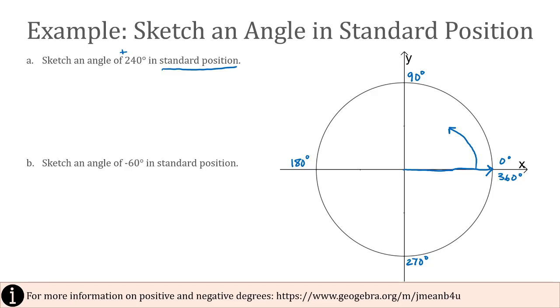240 degrees is going to go through the first quadrant, through the second quadrant, and it looks like it's going to go about 60 degrees beyond that second quadrant, having it end its terminal side in the third quadrant. So this angle in the third quadrant is 240 degrees.